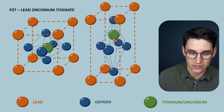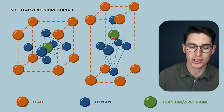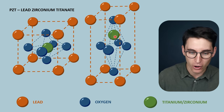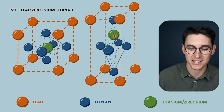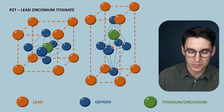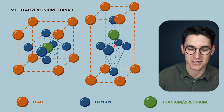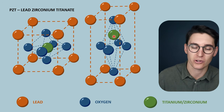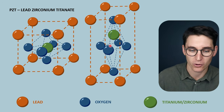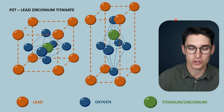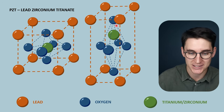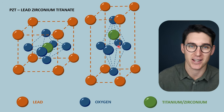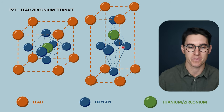If that zirconium or titanium were to shift, the positive center would no longer match the negative average center — we would have formed what is known as a dipole. We would have a positive end and a negative end to our PZT crystal — a dipole has been formed.